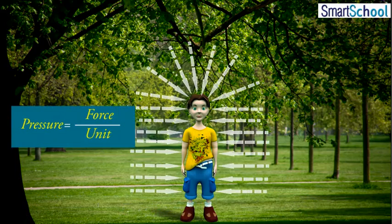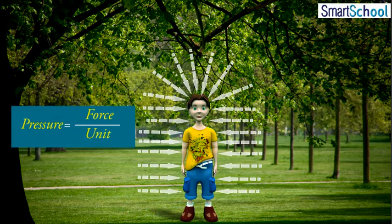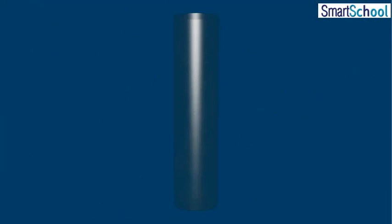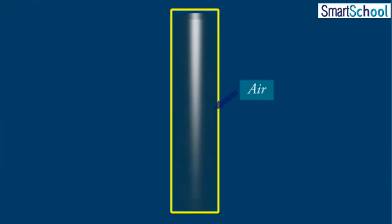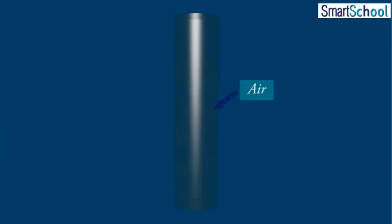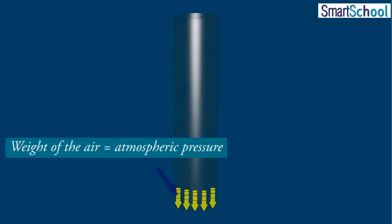We know that pressure is force per unit area. If we imagine a unit area and a very long cylinder standing on it filled with air, then the weight of the air in this cylinder is the atmospheric pressure.